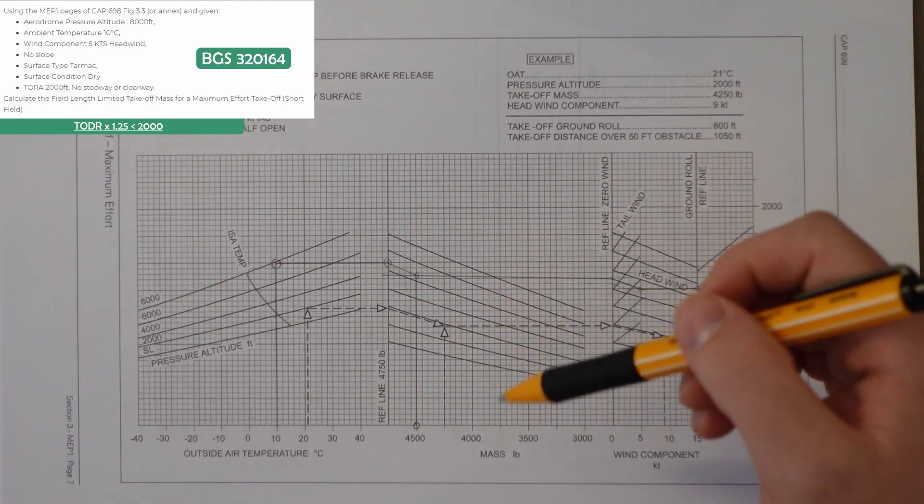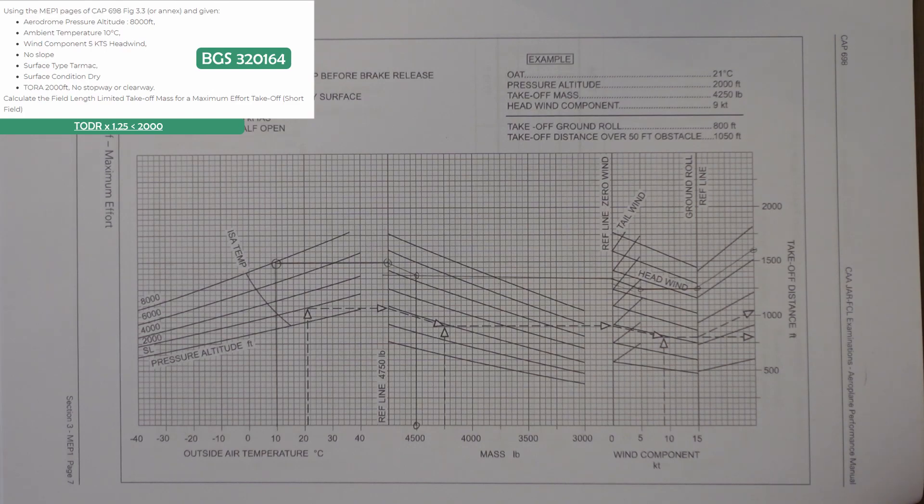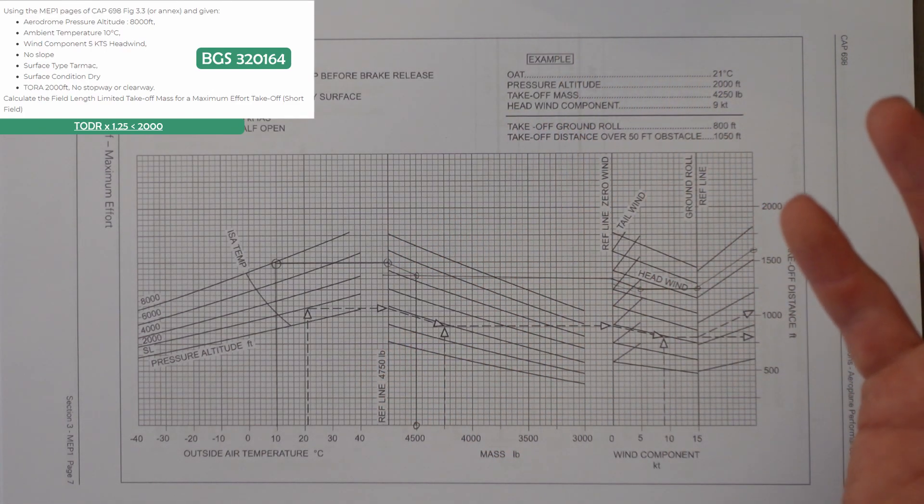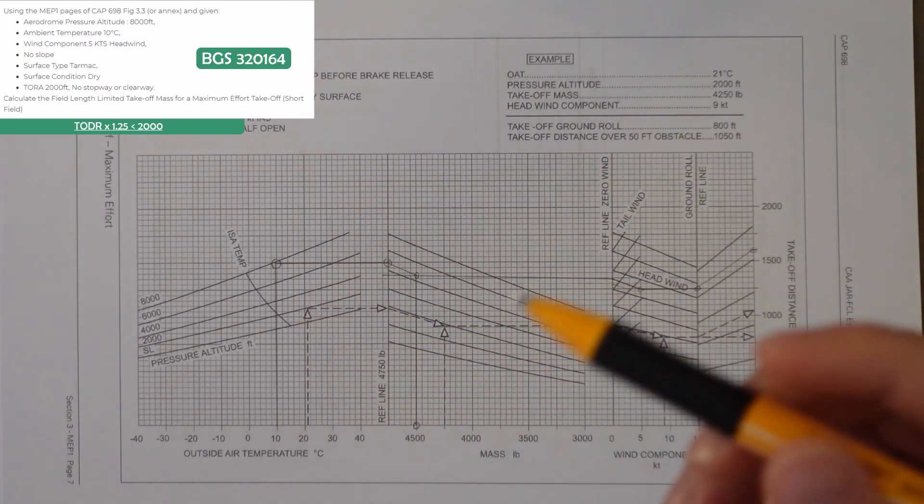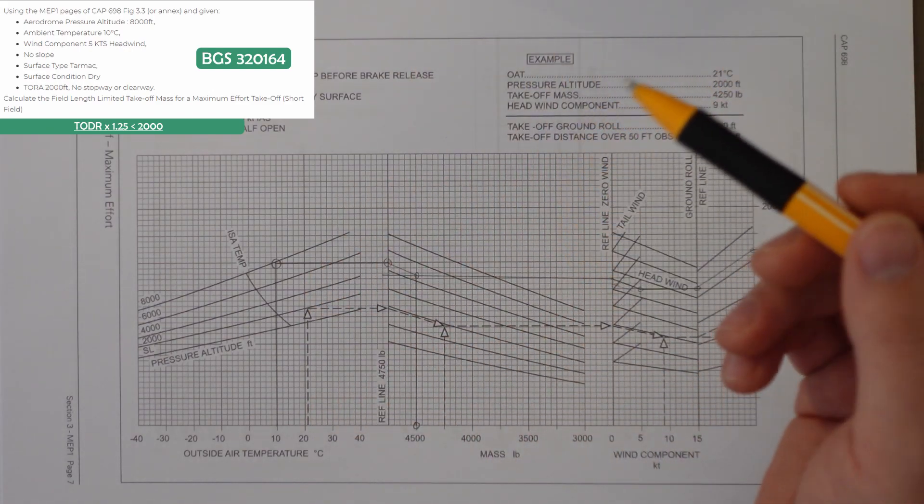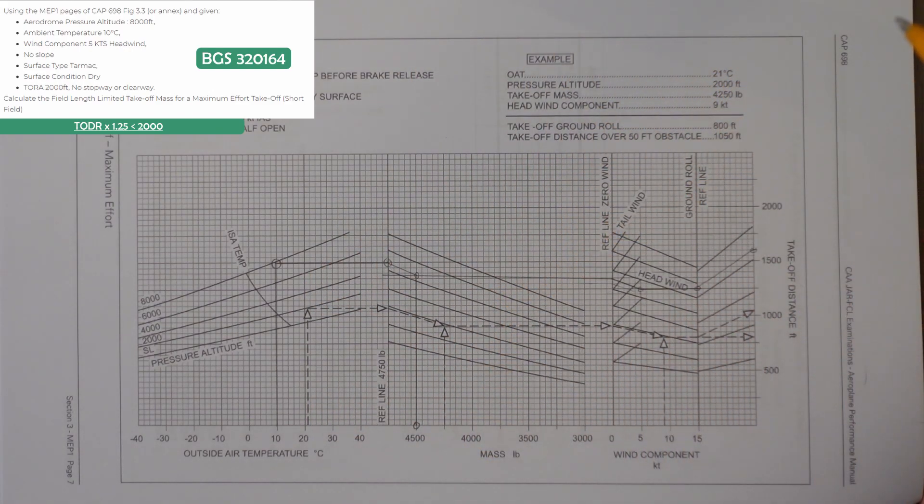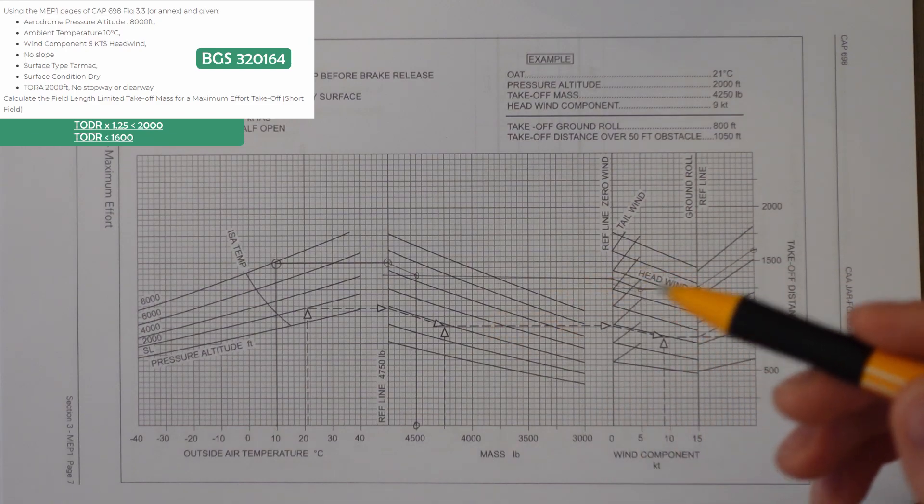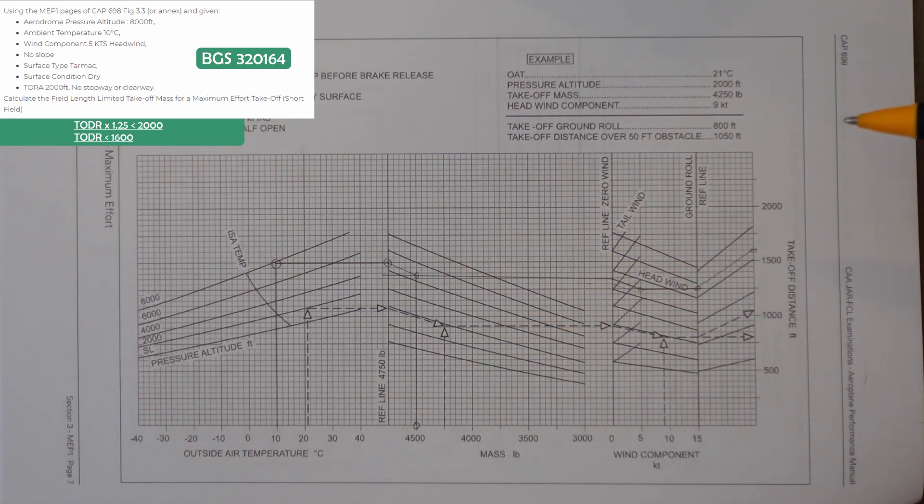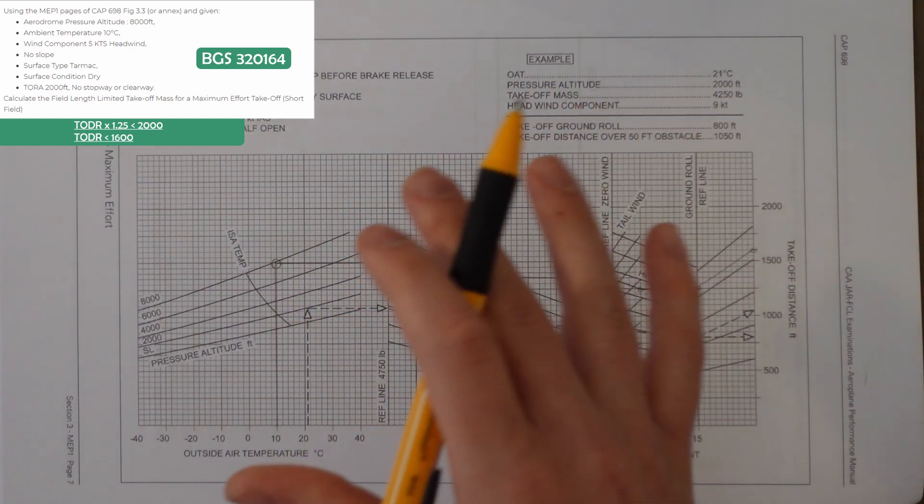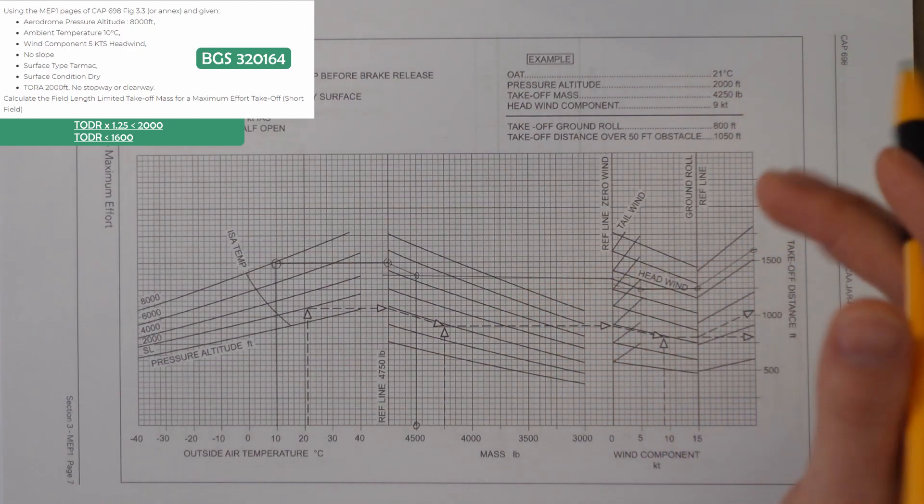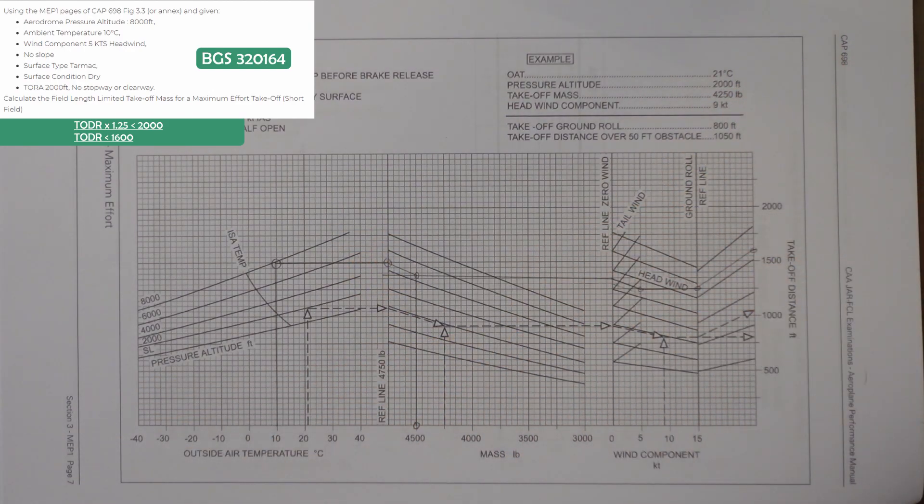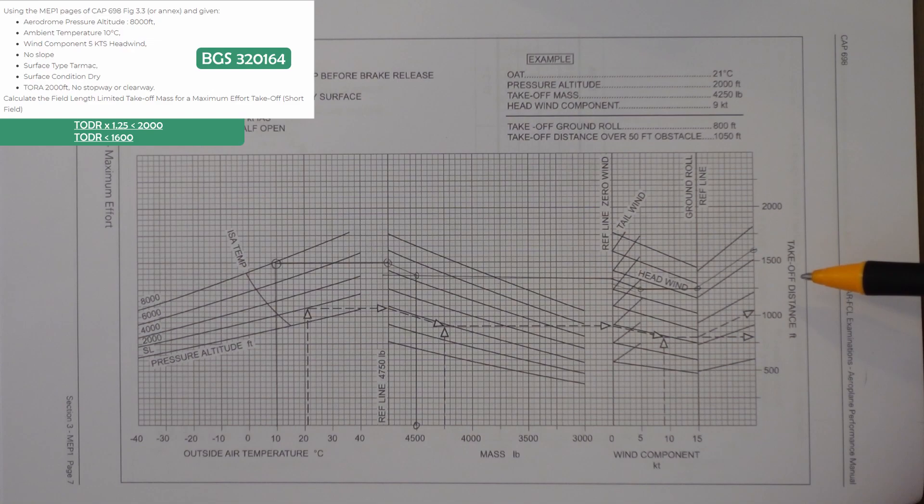Then we go into the graph with all of our information, figuring out the weight at the end of it. So the takeoff distance required times 1.25 has to be less than the TORA. If we divide the TORA by 1.25, we see that the takeoff distance required has to be less than 1,600. There's no slope or surface condition factors to apply. So we go in with the temperature, the altitude and that takeoff distance that we require and work it backwards.